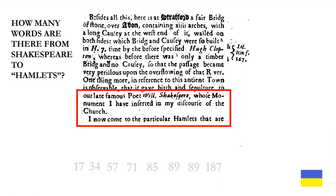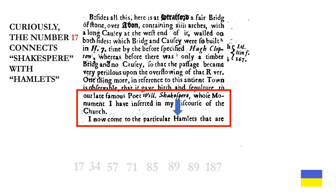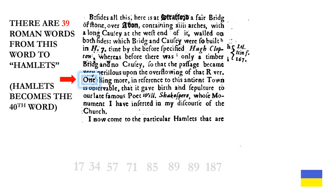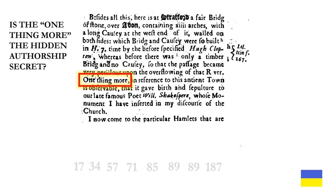How many words are there from Shakespeare to Hamlet's? Notice: Hamlet is spelled with an uppercase H. Curiously, the number 17 connects Shakespeare with Hamlet's. And there are 39 Roman words from the word 'one' to Hamlet's. Hamlet's therefore becomes the 40th word.